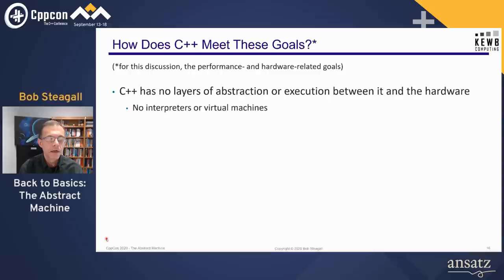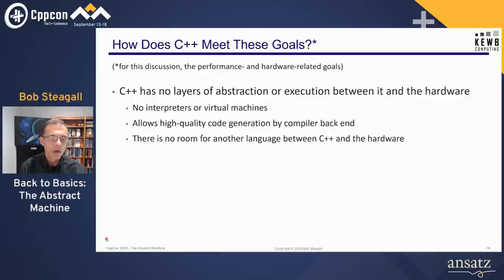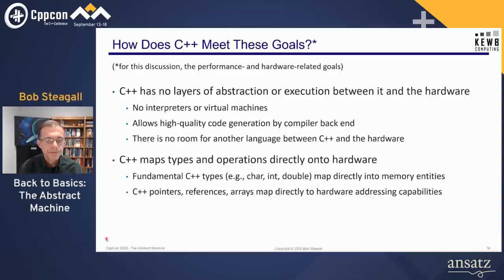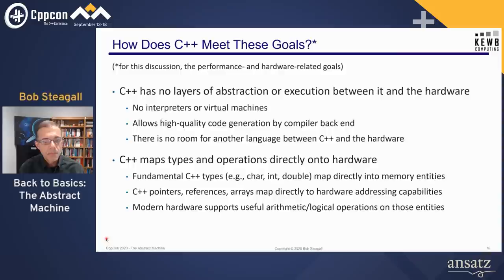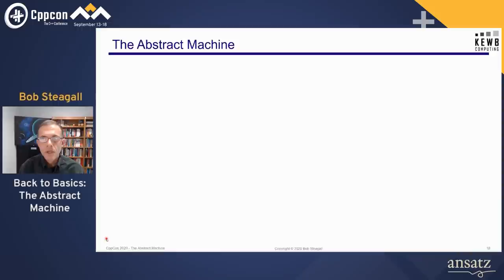How does C++ meet these goals? C++ has no layers of abstraction between it and the hardware — no interpreters or virtual machines like the JVM. Because of this, C++ can perform high-quality code generation in the compiler back end. Literally, there is no room for another language between C++ and the hardware unless you drop down into assembler. C++ maps types and operations very directly onto hardware. Most fundamental types map directly into memory entities, and pointers, references, and arrays map directly into the hardware addressing capabilities of most modern microprocessors. In general, C++ defines how programs work in terms of an abstract machine that is deliberately defined to be very close to the hardware.